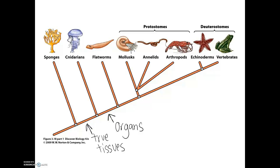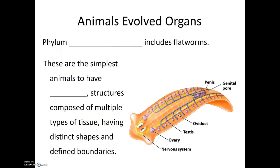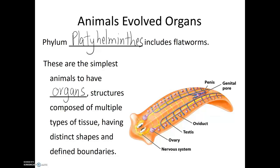The next group of animals we'll be talking about have tissues and organs — they are the flatworms, phylum Platyhelminthes. Phylum Platyhelminthes is composed of the flatworms, and these are the simplest of animals to have organs. We define an organ as being a structure composed of multiple types of tissues, having distinct shapes and defined boundaries.